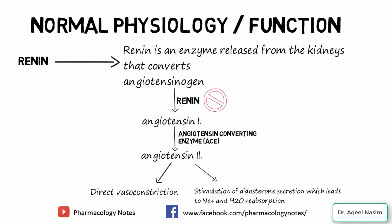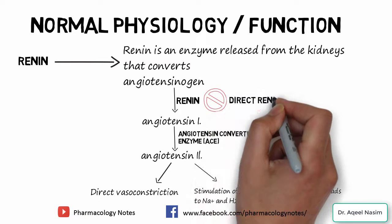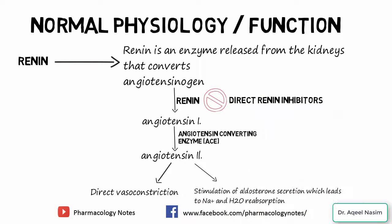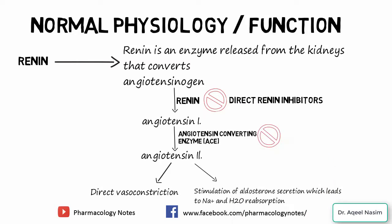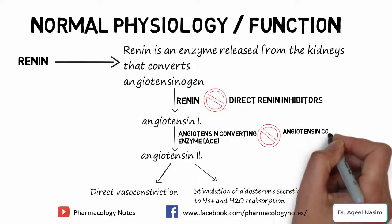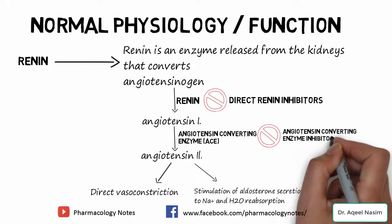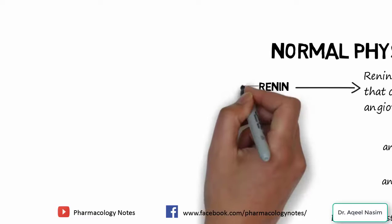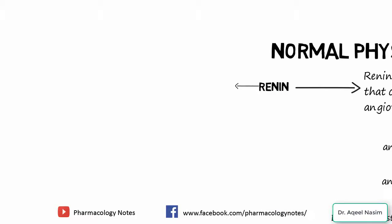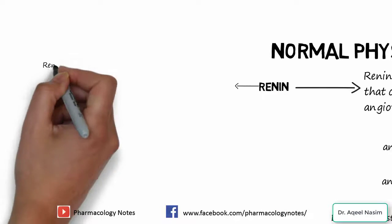Now, if we block renin, the drug class is known as renin inhibitors. If we block the angiotensin-converting enzyme, that class is known as ACE inhibitors. Now let's discuss about renin in more detail.